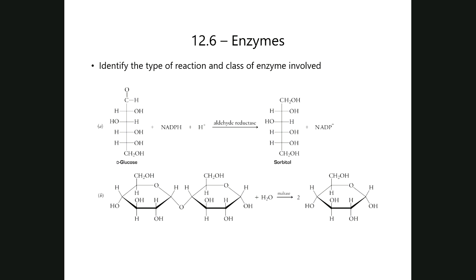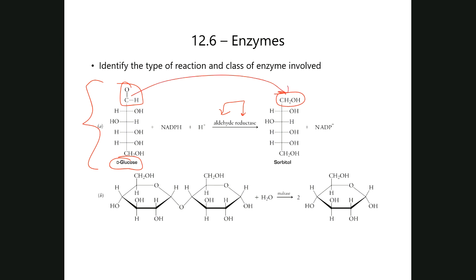Observing the reaction, an aldehyde becomes a primary alcohol — that is automatically a reduction process, and the enzyme name tells you that. This is how sorbitol is generated in living systems. Anytime you see one of these redox coenzymes changing in its hydrogen content — as one becomes reduced, the other becomes oxidized — you know this is a redox transformation. So the enzyme involved is an oxidoreductase.